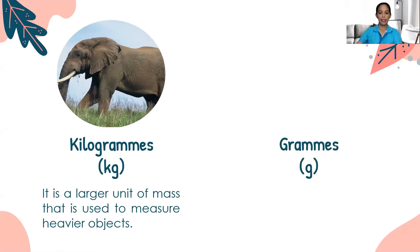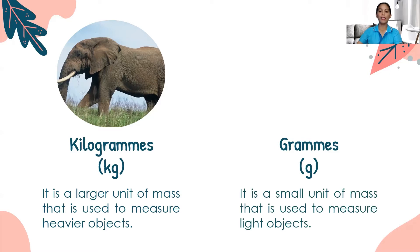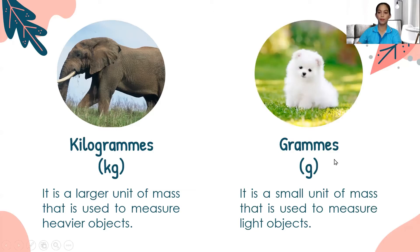Next, let's define grams, or g. It is a small unit of mass that is used to measure light objects. For example, a puppy. A puppy is light because it is small and it has a smaller weight. So kilograms are for larger or heavier objects, and grams are for smaller or lighter objects.